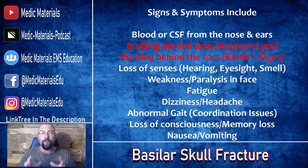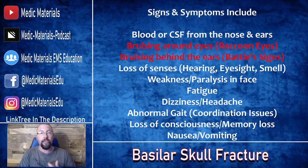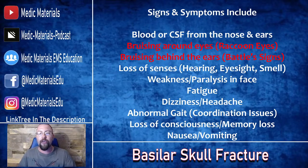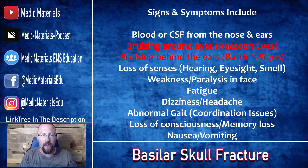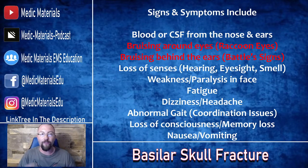Remember, all of those structures within the basilar skull have a lot of nerve endings and nerve ganglia that control your senses — your hearing, your eyesight, your smell. Depending on the severity of the injury, they might not develop raccoon eyes and battle signs for a while, yet they've already lost their hearing, lost their eyesight, or have vision changes. They could also have weakness or paralysis within the facial muscles due to injured facial nerves. They could be fatigued, tired, dizzy, or have headaches.